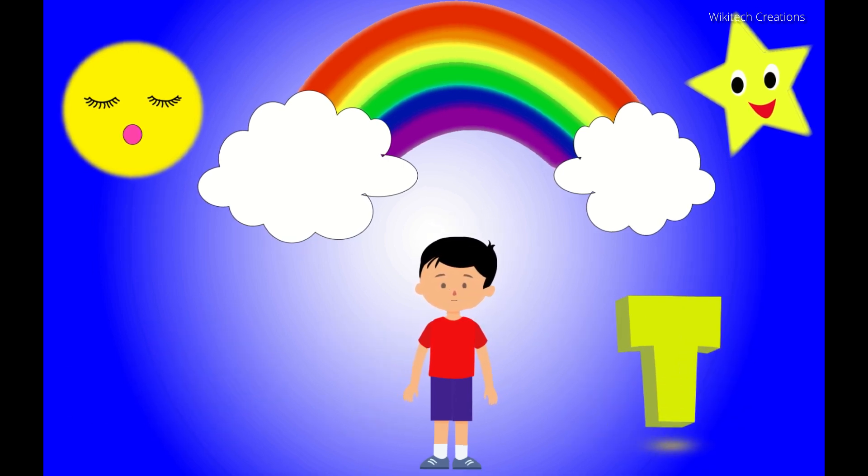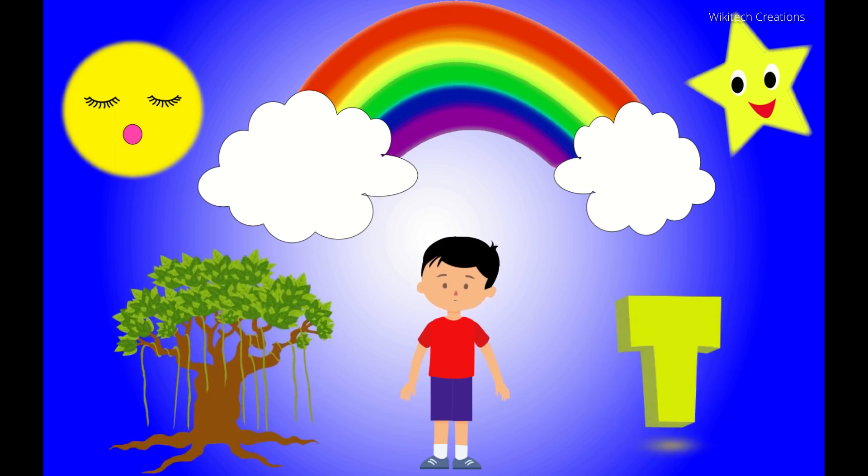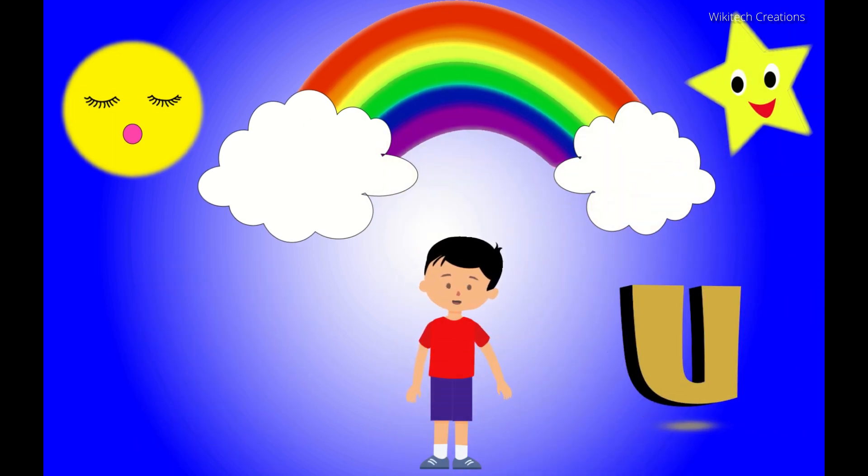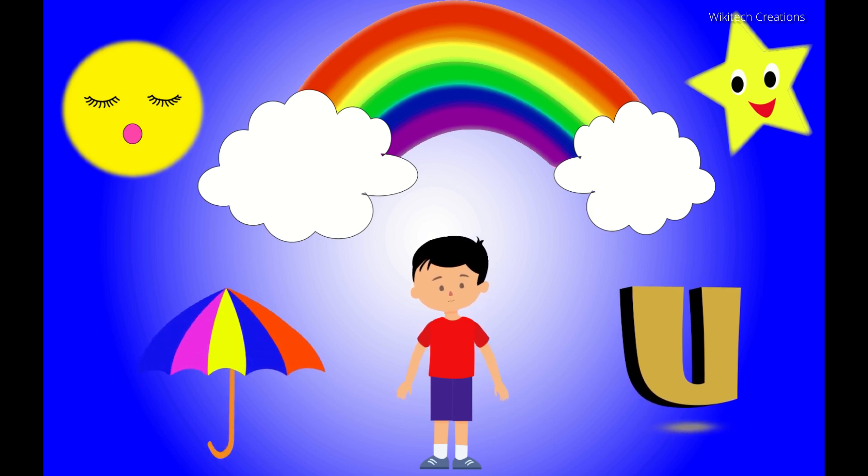This is letter T. T for Tree. This is letter U. U for Umbrella.